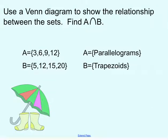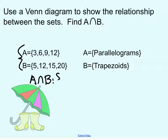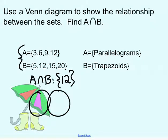Let's use a Venn diagram to show the relationship between sets and find A ∩ B. If A = {3, 6, 9, 12} and B = {5, 12, 15, 20}, then 3, 6, and 9 are unique to A; 5, 15, and 20 are unique to B; and in the middle section we would have 12. So A ∩ B = {12}.